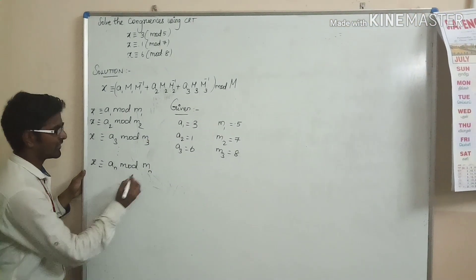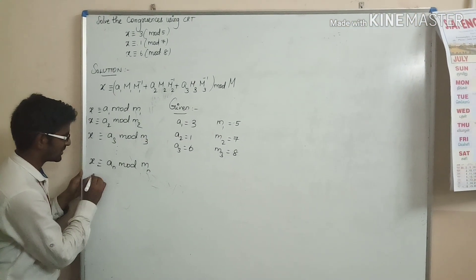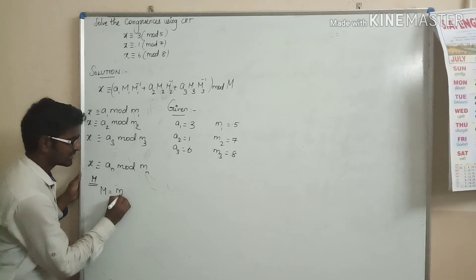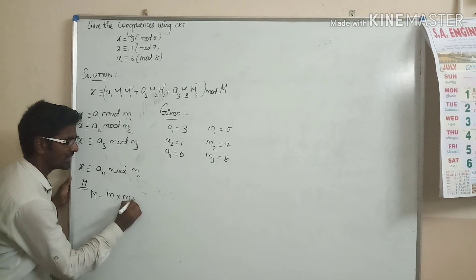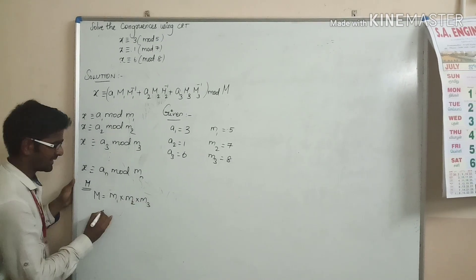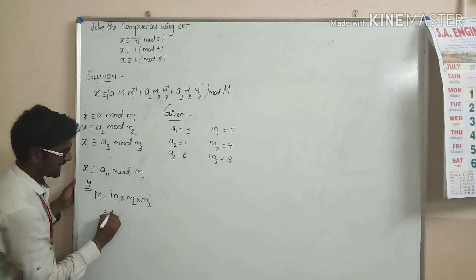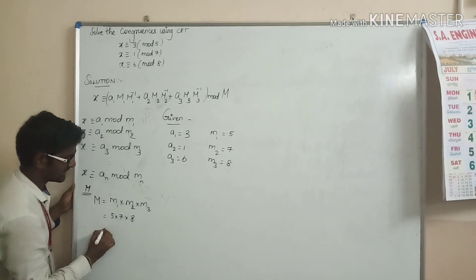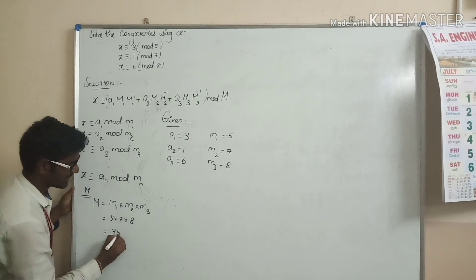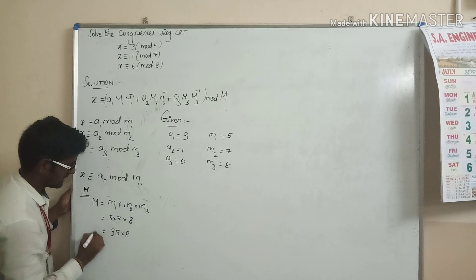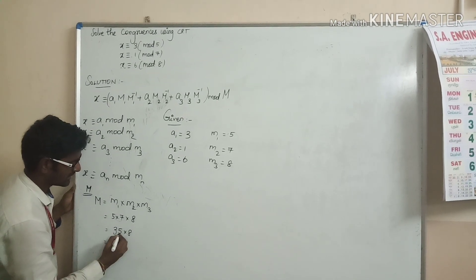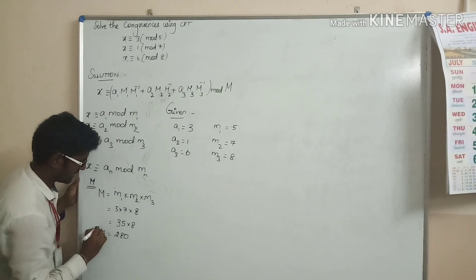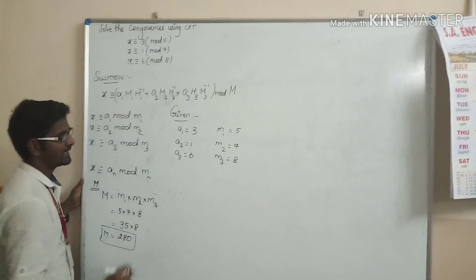What is the formula for finding capital M? Capital M is equal to small m1 × small m2 × small m3, which is equal to 5 × 7 × 8. So 35 × 8, which equals 280. So capital M is equal to 280.